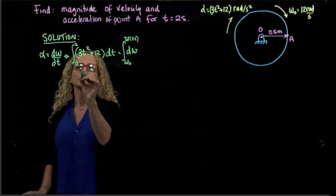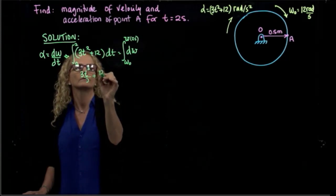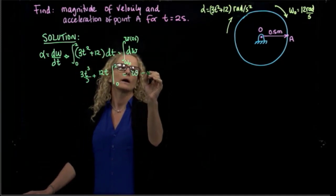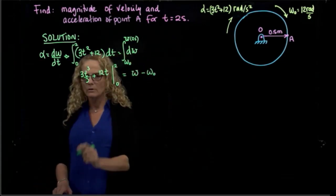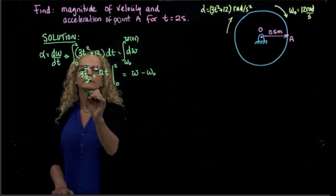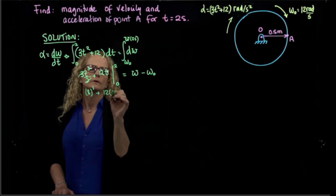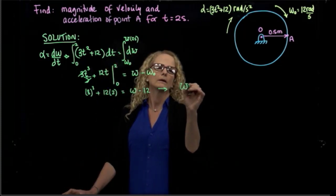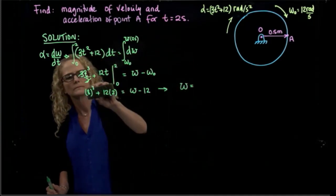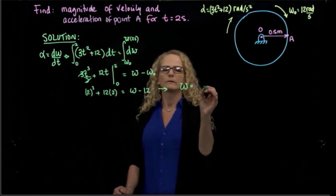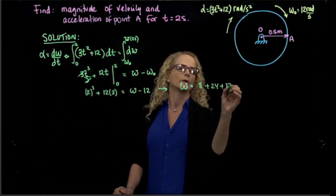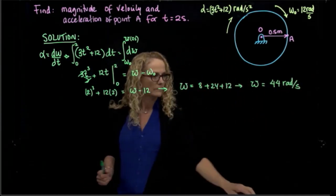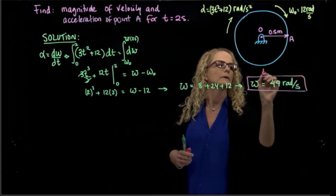When we integrate this equation, we get t³ + 12t evaluated between 0 and 2, which equals the angular velocity at 2 seconds minus the initial angular velocity. Substituting, we get 8 + 24 + 12, so omega is equal to 44 radians per second at t = 2 seconds.